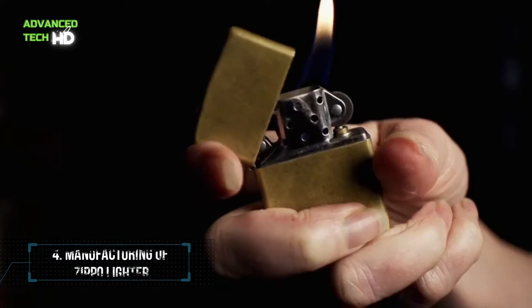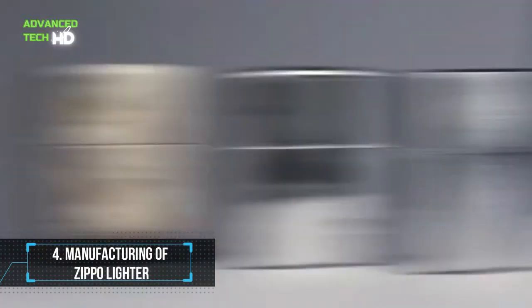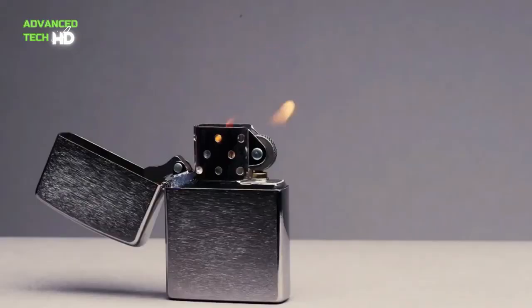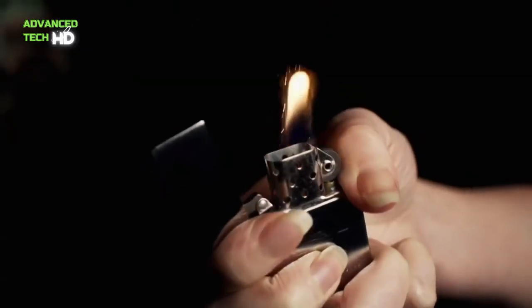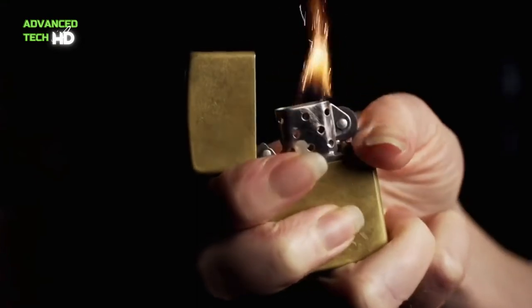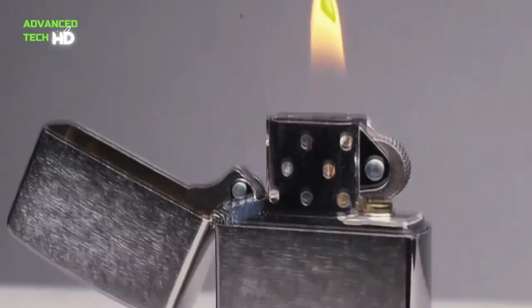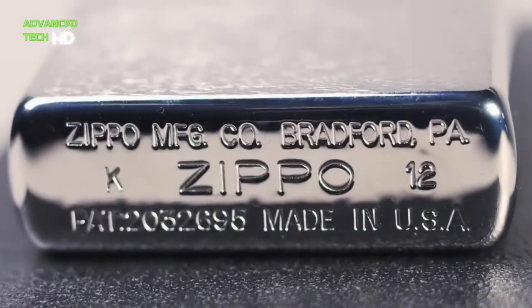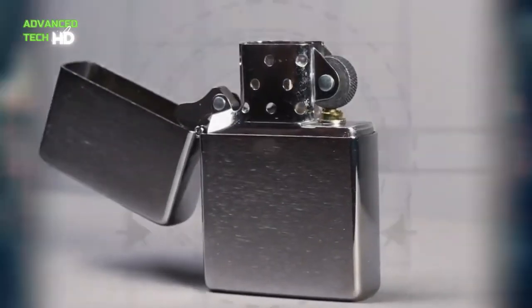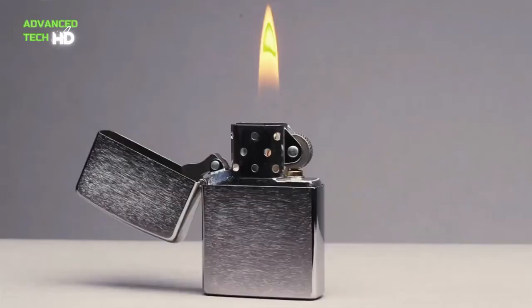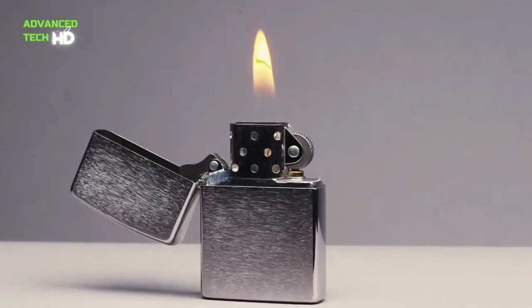Number 4: Manufacturing of Zippo Lighter. The manufacturing of the Zippo Lighter is an amazing process. Different machines are linked together to manufacture this awesome lighter. About 70,000 lighters are manufactured each day. Large sheets of brass are used as raw material, which is then shaped into required sizes and shapes. The bottom and the upward cover is manufactured at the beginning.